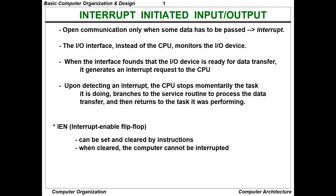When the interface finds that the IO device is ready for data transfer, it generates an interrupt request to the CPU. Upon detecting an interrupt, the CPU stops momentarily the task it is doing and branches to the service routine to process the data.